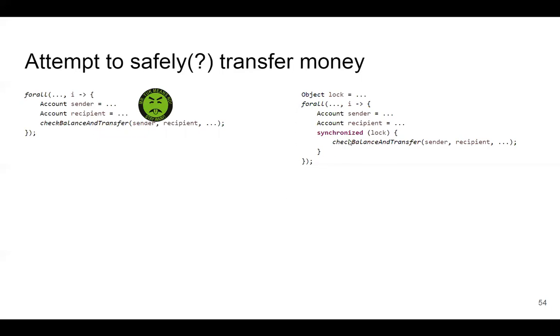I do the same code, and before I transfer any money I synchronize on that lock. That will work, right? That's correct, but now I've got this sequential code. I can only transfer one at a time. It's like sequential but worse.